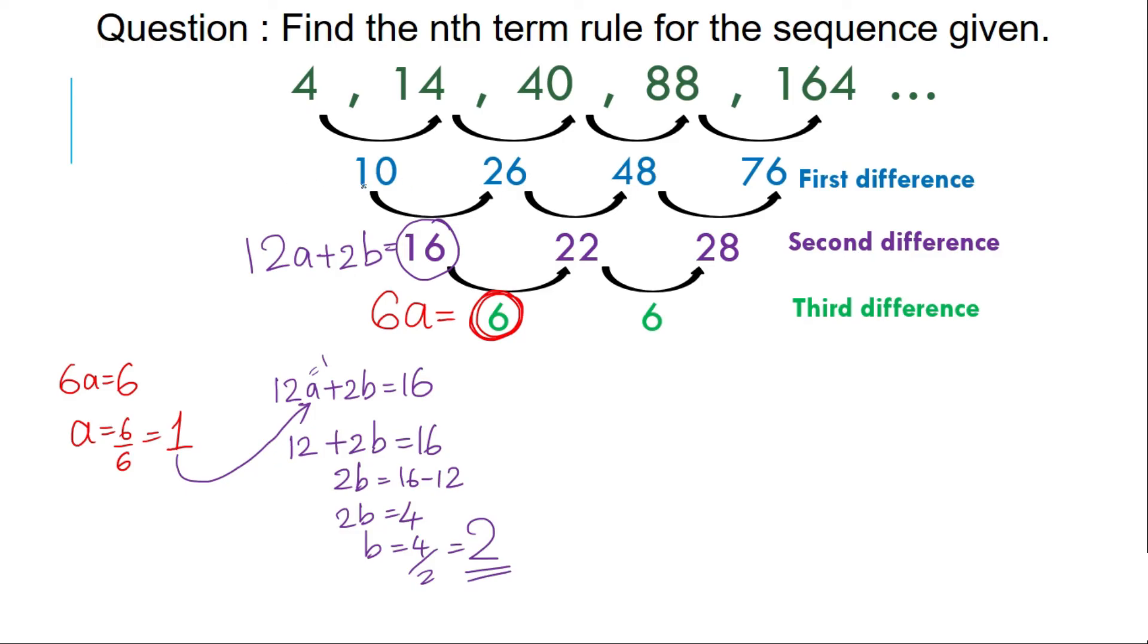Number 3, I am going to find c from my first difference and the equation that I am going to use is 7a plus 3b plus c equal to my first term of my first difference. So 7a plus 3b plus c equals 10. Substituting the values: 7 plus 6 plus c equals 10, 13 plus c equals 10, c equals 10 minus 13 giving me negative 3.